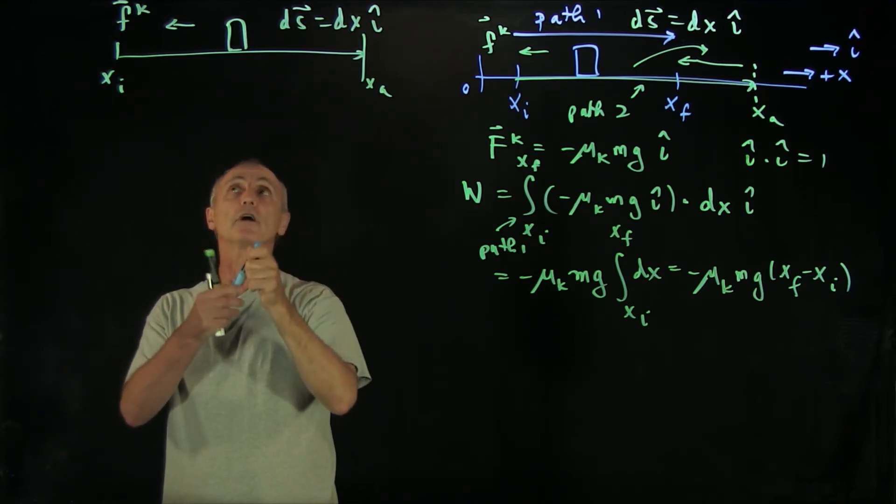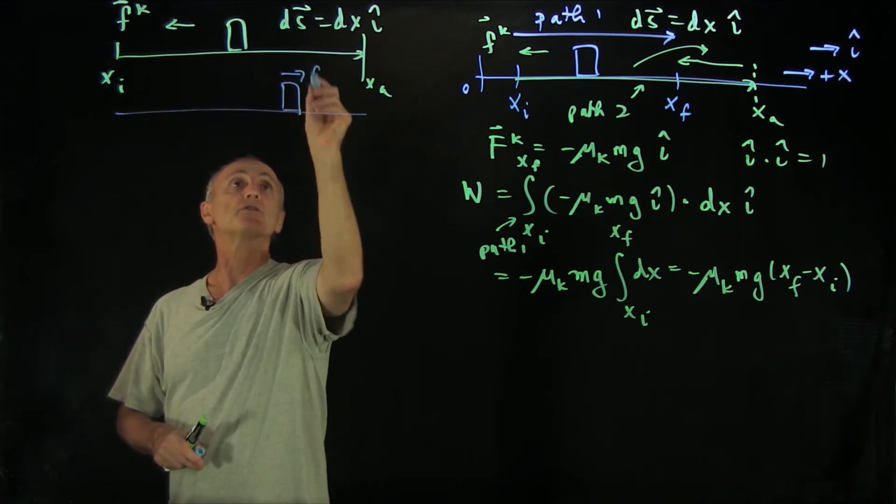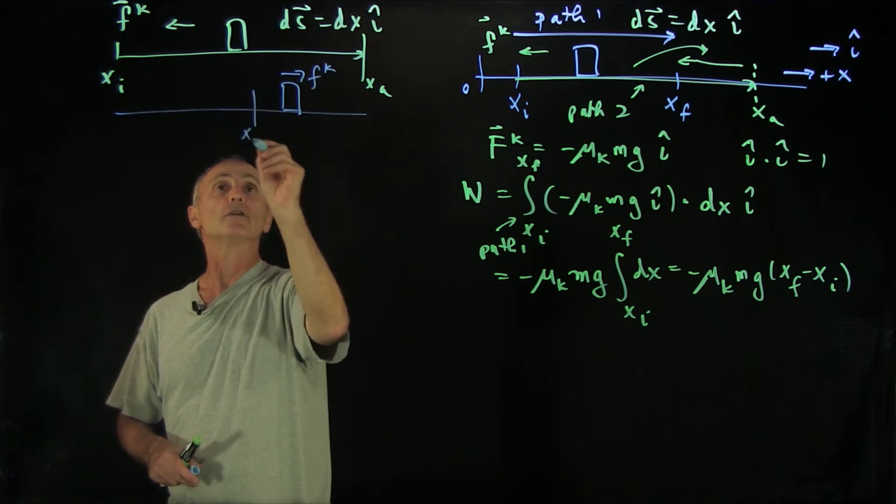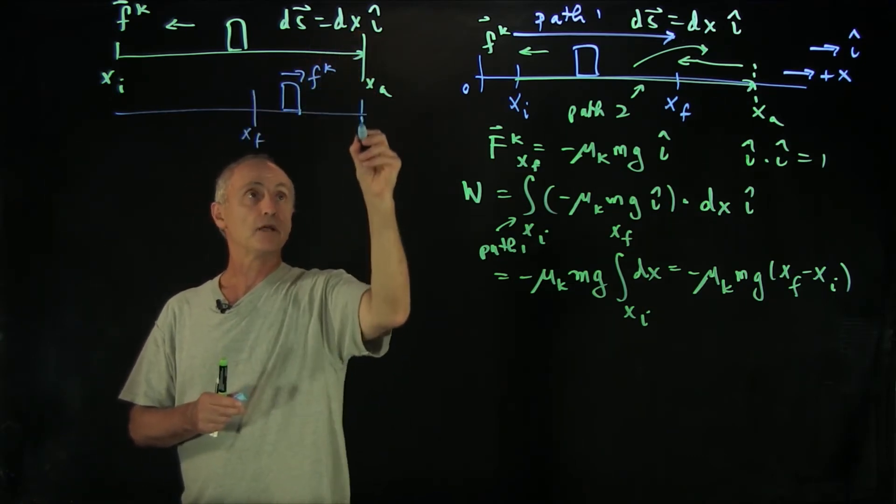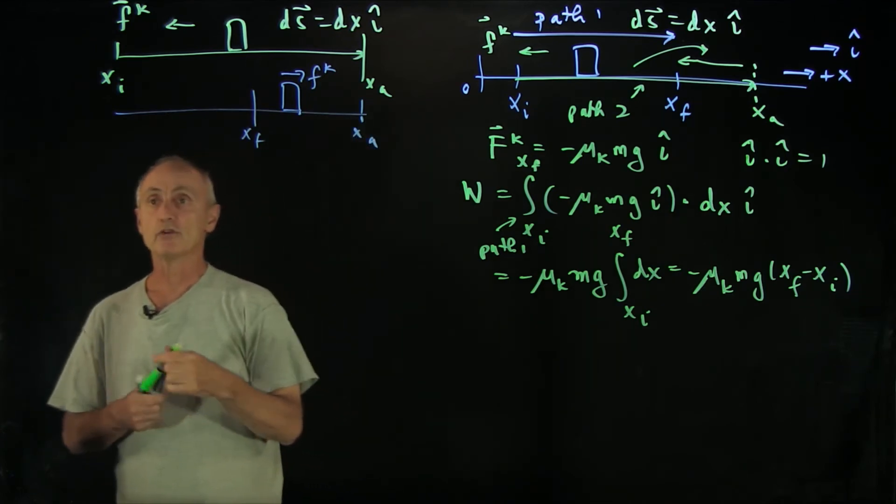Then when we're coming back, I'll put that in a different color below it. When we come back, notice the friction force is going to change direction. ds will still be written that way, but pay close attention to the endpoints of the integral.